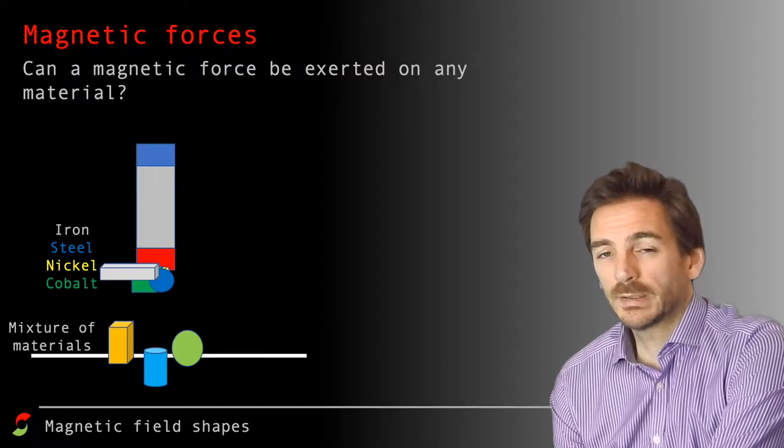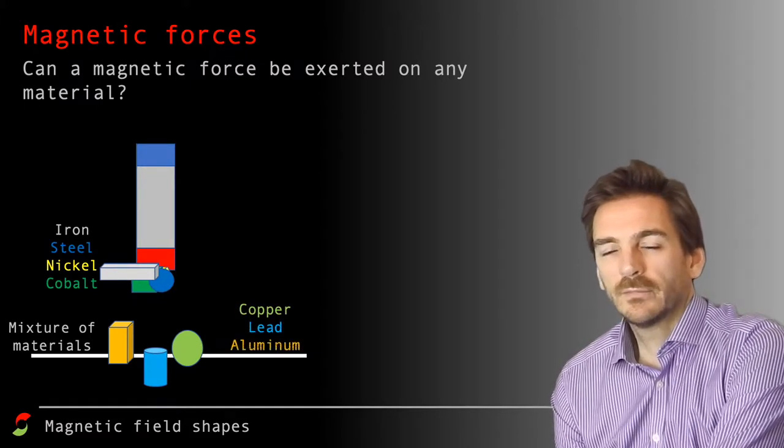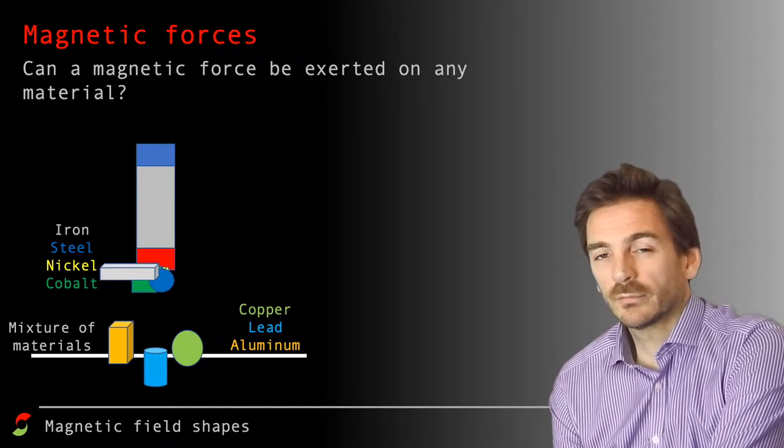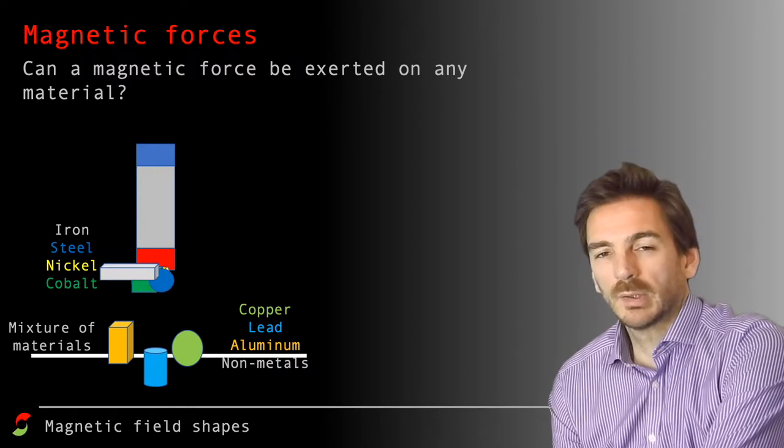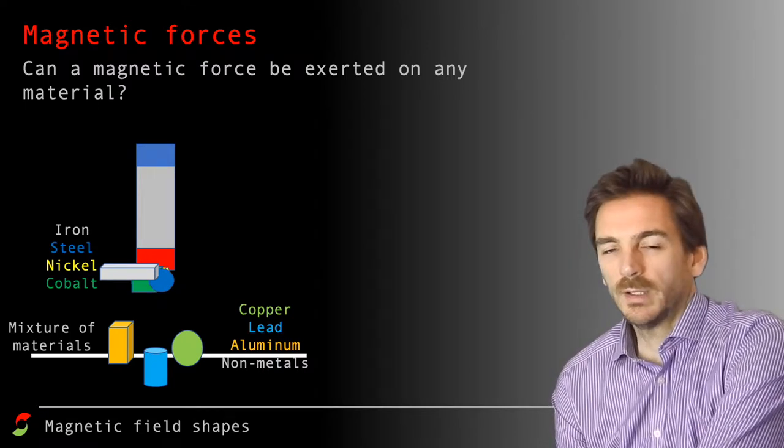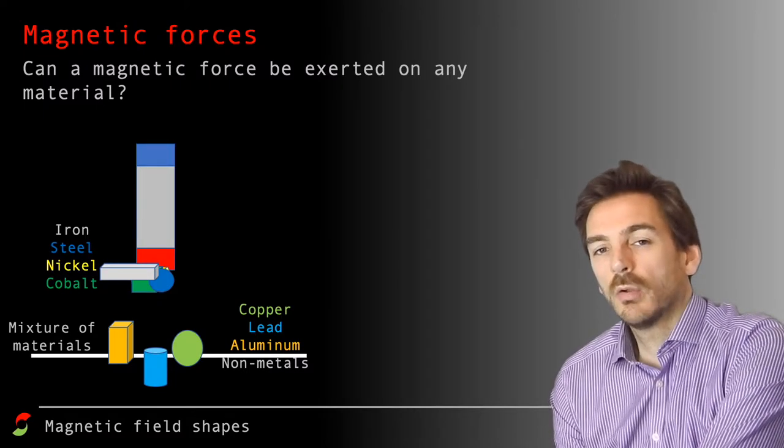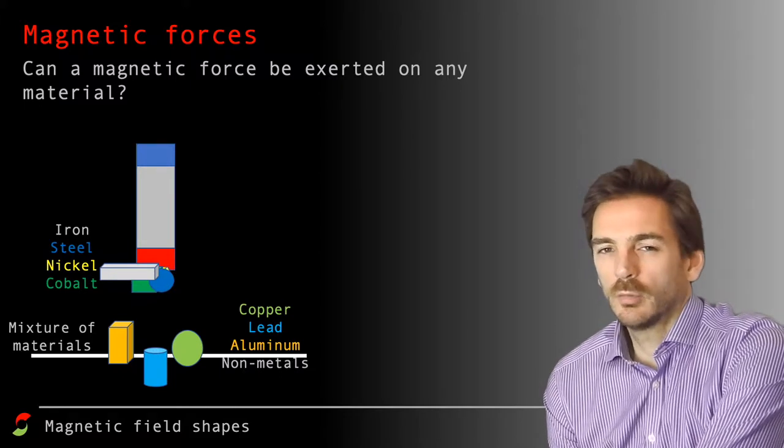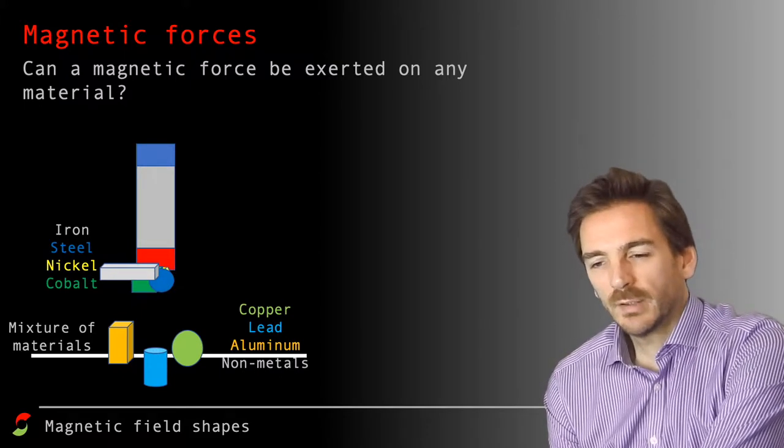Lots of materials are not magnetic though. Some examples of those are copper, lead, aluminum, none of those metals are magnetic or the other metals for that matter. And certainly none of the non-metals like rubber and plastic are going to be magnetic. So not all materials are magnetic and certainly not all metals are magnetic. Stick to iron, nickel, cobalt, and steel for examples of magnetic materials.